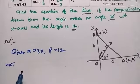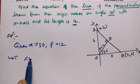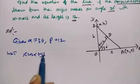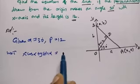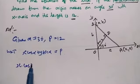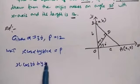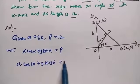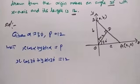The normal form equation is X cos α + Y sin α = P. Substituting, we get X cos 30° + Y sin 30° = 12.